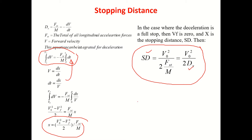Stopping distance basically depends on the deceleration rate. These are very important in braking: when the vehicle is running at a certain velocity and we need to avoid an obstacle, within what distance should we be able to stop? To stop within that distance, what should the deceleration rate be? If I apply brake to achieve the required deceleration, what actually happens — this is the key question.